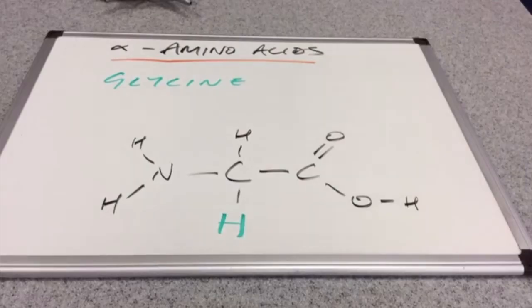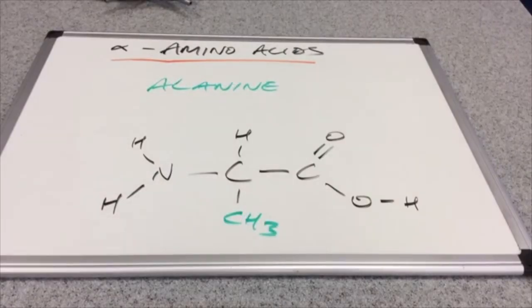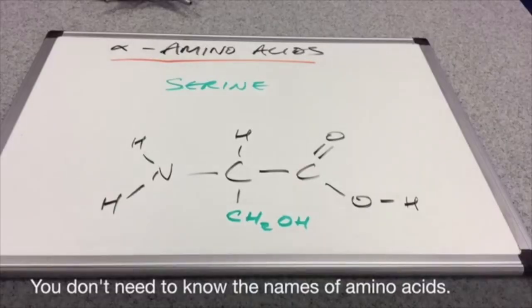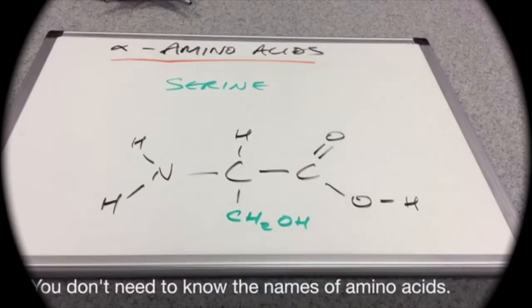We'll just take a look at some simple amino acids. So obviously when the R group is an H, that's the simplest of all the amino acids, and that's known as glycine. When the R group's a CH3 group, we call it alanine. And the last one we'll look at is when the R group's a CH2OH group, we call it serine.